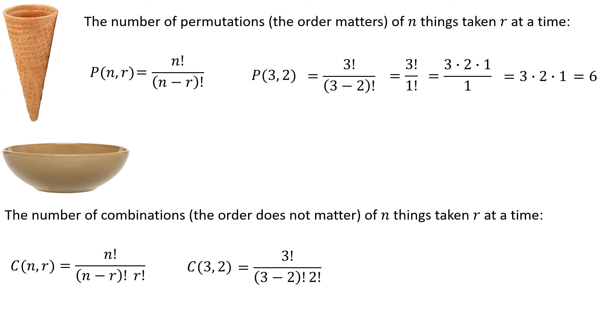3 factorial over 3 minus 2 factorial times 2 factorial. Right, so I still have 3 times 2 times 1 as my top. I still have that 1 on the bottom, but now I also have a 2 times 1 on the bottom. Of course, I can do some canceling and reducing, and of course 3 over 1 is just 3.